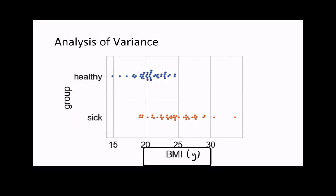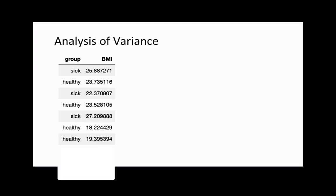We wish to quantify the difference between these two populations with respect to their body mass index. To do so, we will denote the body mass index as a variable y, and we'll label the sick samples with x equals 1 and the healthy samples with x equals 0. Here, x is a variable that determines if a patient belongs to a healthy or sick group. If we take a peek into this dataset, we can see a body mass index measurement and a group label for each row, where each row is a unique measurement for our patient.